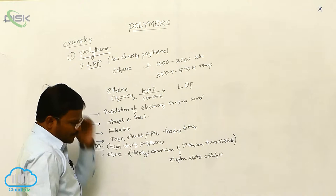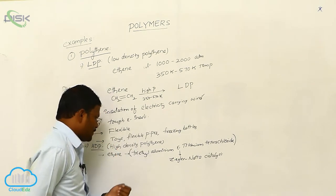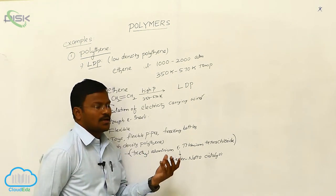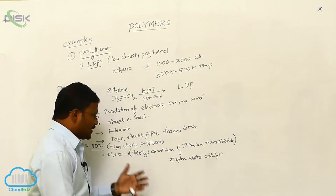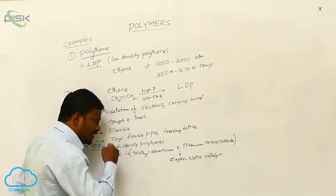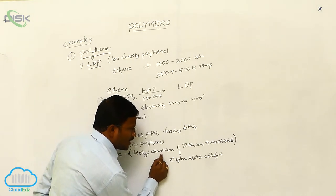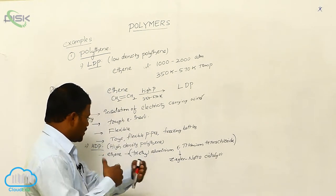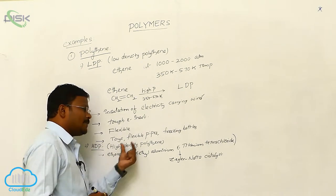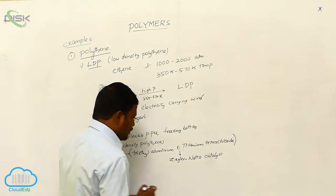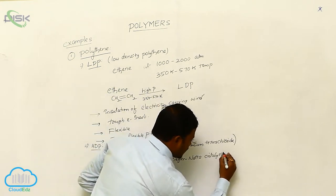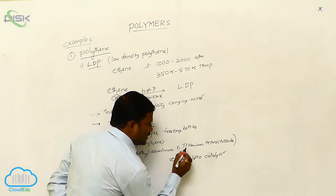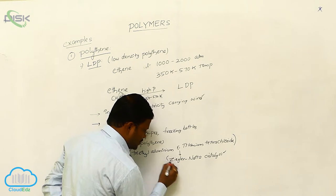So, once again, in the preparation of high-density polyethylene, when ethene molecules are dissolved in alkylating solvents or non-polar solvents at high temperature, in the presence of triethyl aluminium and titanium tetrachloride as catalyst, polymerization takes place between ethene molecules and finally results in high-density polyethylene as the product. The most important expected point is: the mixture of triethyl aluminium and titanium tetrachloride is called Ziegler-Natta catalyst.